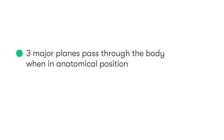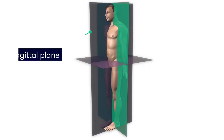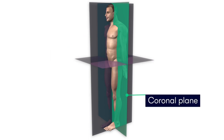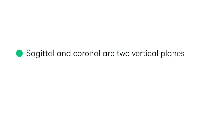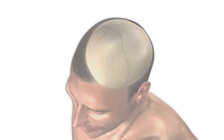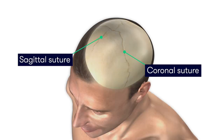The next thing to be aware of is the anatomical planes of the body. There are three major planes that pass through the body when it's in its anatomical position: the sagittal plane, the coronal plane, and the transverse plane, which can also be referred to as the horizontal or axial plane. The sagittal and coronal planes are two vertical planes which can be remembered by the sutures of the skull which share their name.